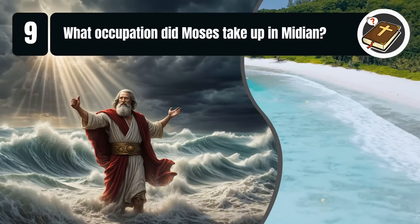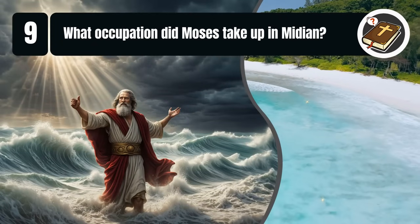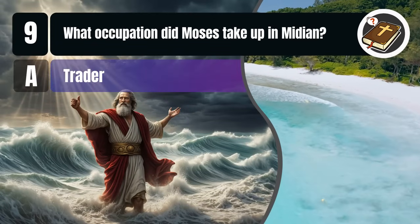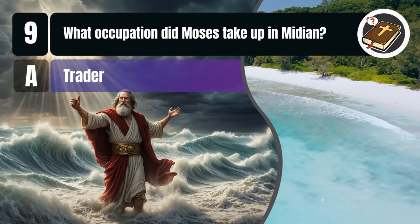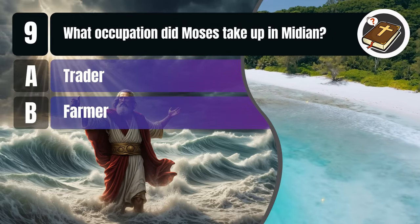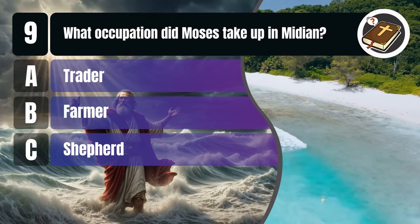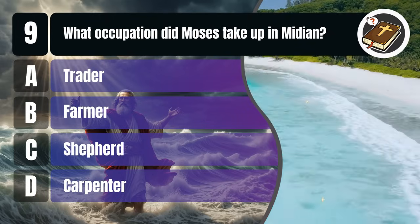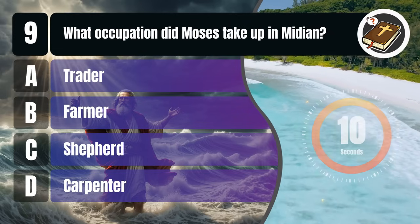Question 9. What occupation did Moses take up in Midian? A. Trader, B. Farmer, C. Shepherd, D. Carpenter. You get 10 seconds.